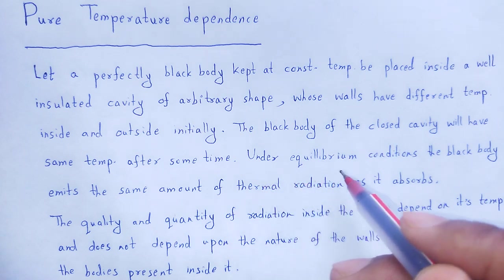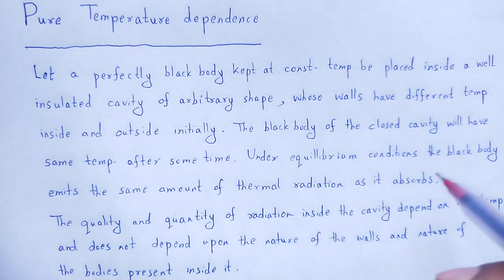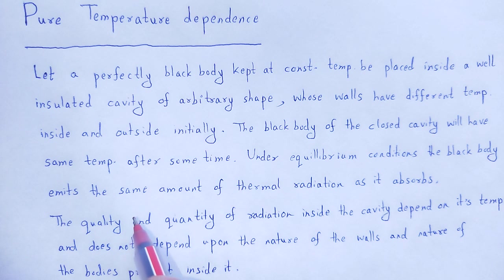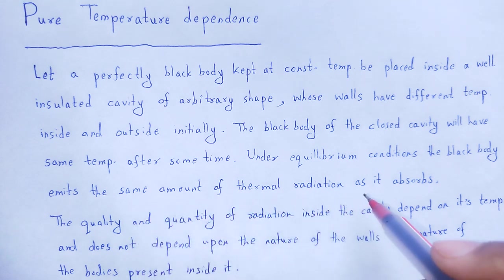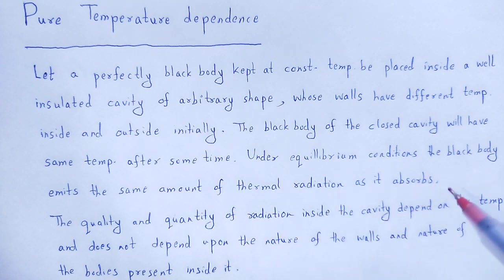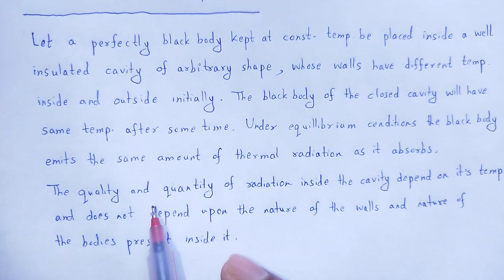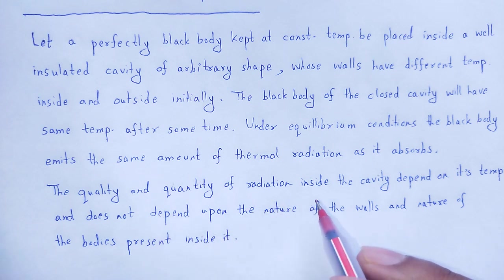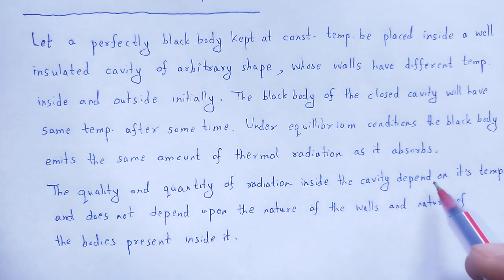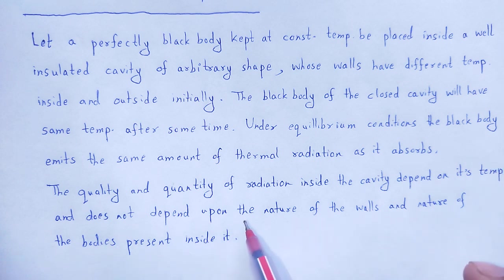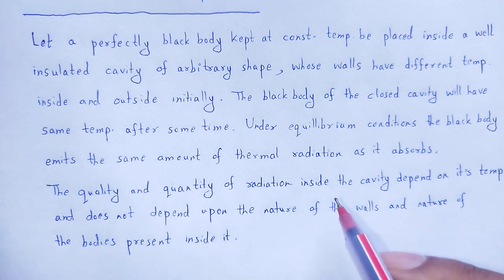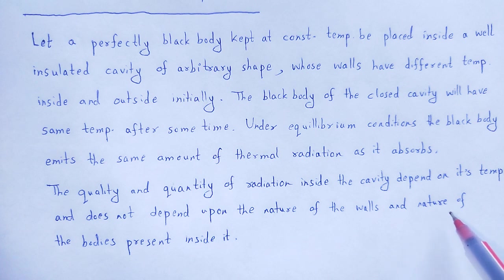So, under equilibrium conditions, the blackbody emits the same amount of thermal radiation as it absorbs. This is the property of blackbody radiation. Therefore, the quality and quantity of radiation inside that cavity depend on its temperature and also depend upon the nature of the walls and nature of the bodies present inside it.